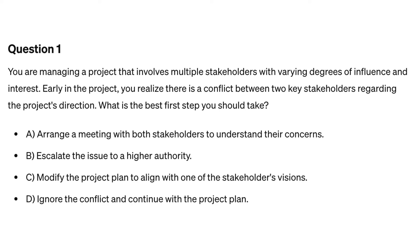Question one. You are managing a project that involves multiple stakeholders with varying degrees of influence and interest. Early in the project, you realize there is a conflict between two key stakeholders regarding the project's direction. What is the best first step you should take? A. Arrange a meeting with both stakeholders to understand their concerns. B. Escalate the issue to a higher authority. C. Modify the project plan to align with one of the stakeholders' visions. D. Ignore the conflict and continue with the project plan.